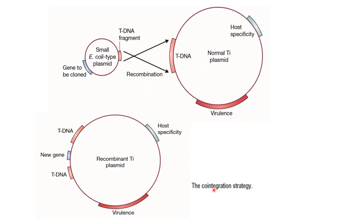In the co-integration strategy, there are two different plasmids: the small E. coli plasmid and the normal Ti plasmid. The small plasmid carries the gene to be cloned and a T-DNA fragment. When they are recombined, they exchange their segments, and the gene of interest is inserted into the T-DNA region. This recombinant plasmid can then be introduced into the plants to transfer the desired gene.